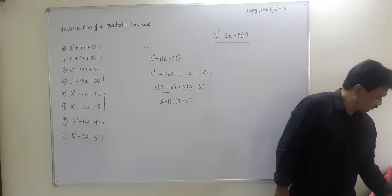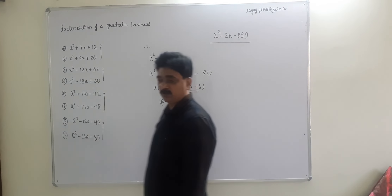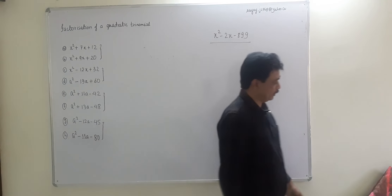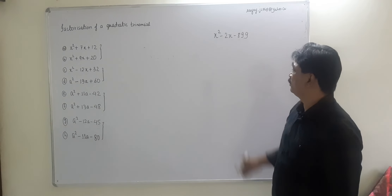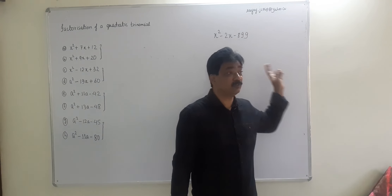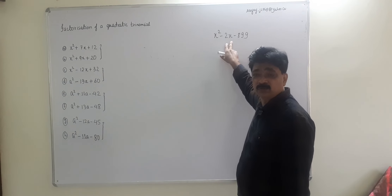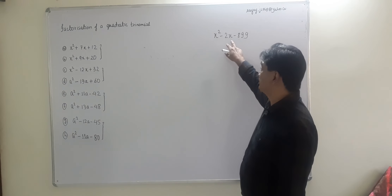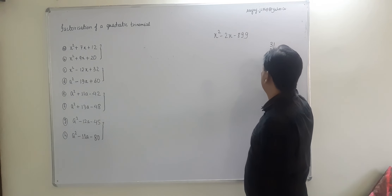Pause the video and try it on your own first. When you play, note: the difference should be 2 and the product is 899. Since the numbers must be very close together, and 899 is close to 900 = 30 × 30, we try 31 and 29. Check: 31 × 29 = 899.